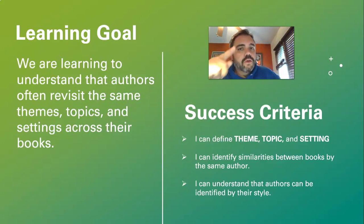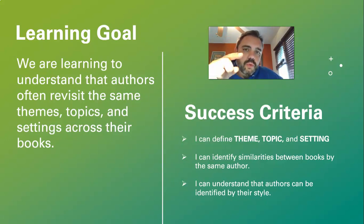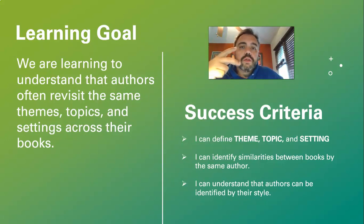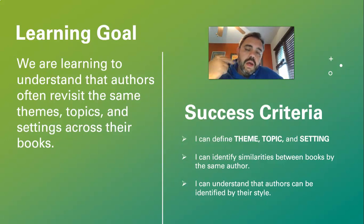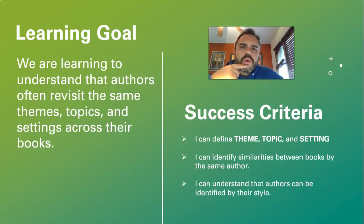We have some I can statements. First and foremost, you're going to be able to say to yourself: I can define topic, theme, and setting, which is really important. Number two, I can identify similarities between books by the same author. And number three, equally as important, I can understand that authors can be identified by their style. You hit all those three along the way, you'll pull right into success station, population U.